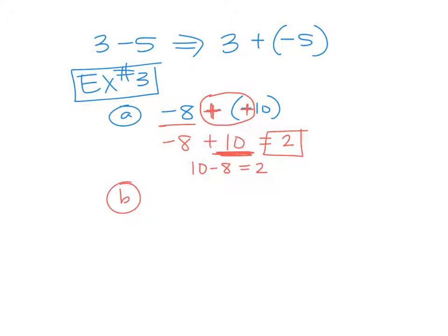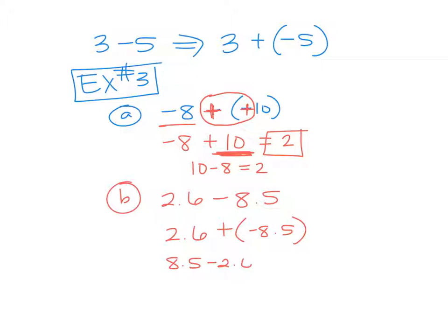How about this? How do you do 2.6 minus 8.5? If I want to turn that into an addition problem, what would it look like? Minus a positive 8.5 — now it's minus a positive — that becomes plus a negative. So right now it's minus a positive; we're going to turn it into 2.6 plus a negative 8.5. Look at your signs — one is positive, one is negative. Do we add them or subtract them? You subtract those. So it's going to be 8.5 minus 2.6, which is 5.9. Is your answer going to be positive or negative? Negative — because this is the bigger number and it is negative. So that's negative 5.9.